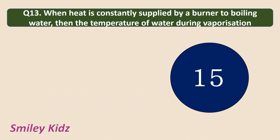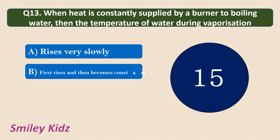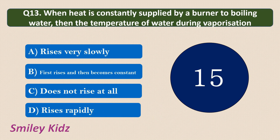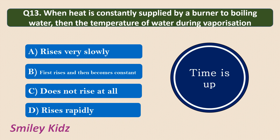Question number 13. When heat is constantly supplied by a burner to boiling water, then the temperature of water during vaporization is? Options are: rises very slowly; first rises and then becomes constant; does not rise at all; or rises rapidly. The correct answer is does not rise at all. When heat is constantly supplied to boiling water, the temperature will not rise at all.